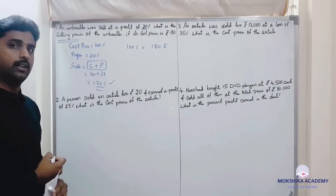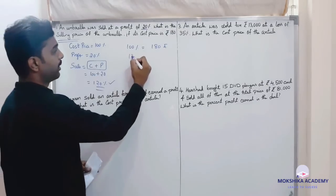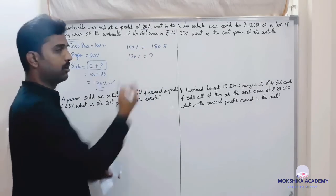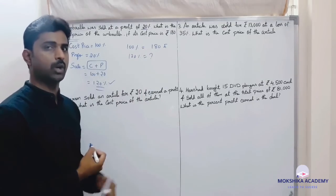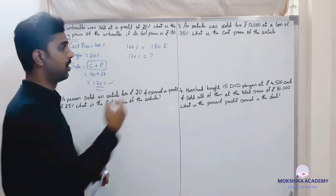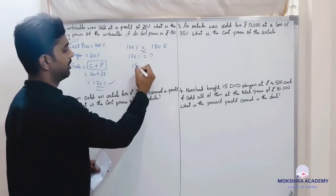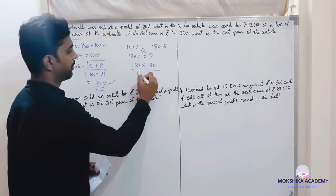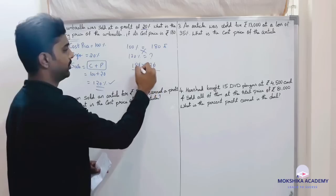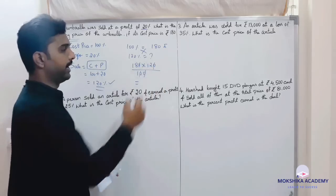Selling price, so 120 percent is equal to question mark. This is how smart way you can answer the question. Just cross multiply: 180 into 120 divided by 100.